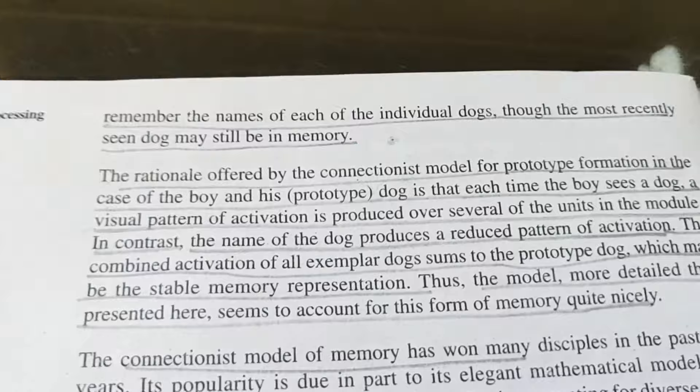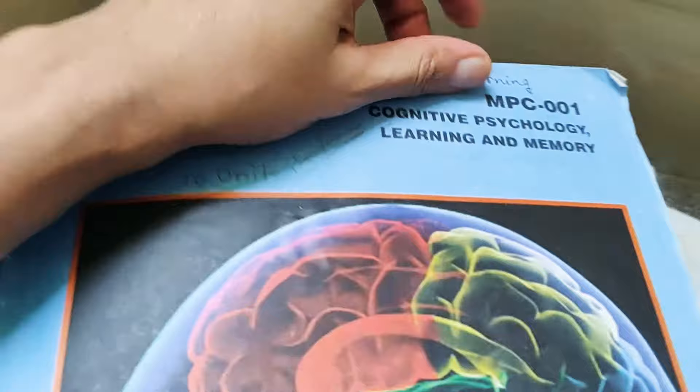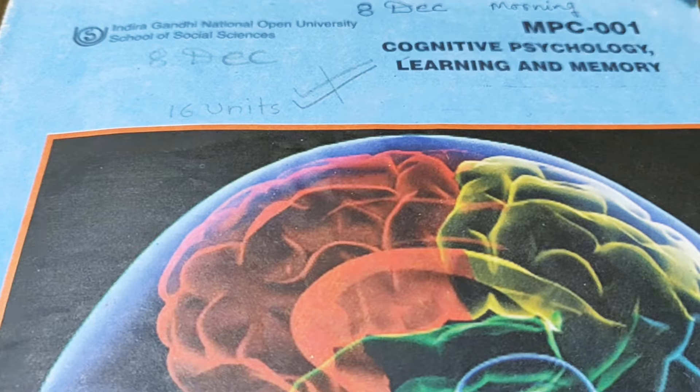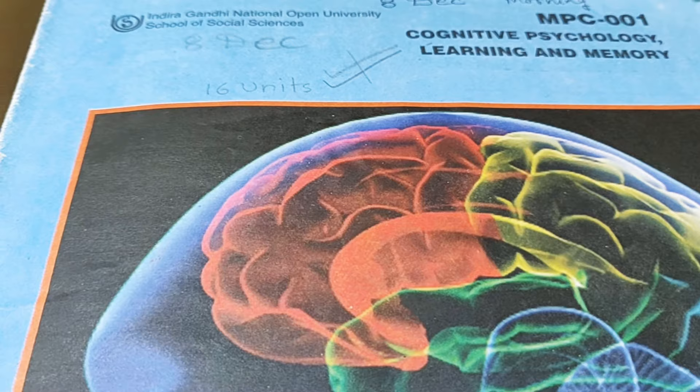This was the whole of Unit 4, Block 1, MPC-001. There is also an example of a prototype dog — you have a prototype with four legs, a tail, and canine teeth, and when you see a real dog, you correlate and identify it. This is how our PDP model works. Friends, I hope you learned a lot from this video. Do like this video, subscribe to my channel, press the notification bell, and share my videos with your friends. Thanks for watching, take care, bye bye.